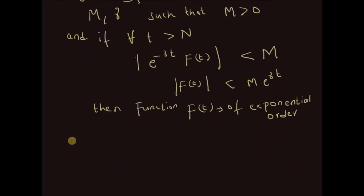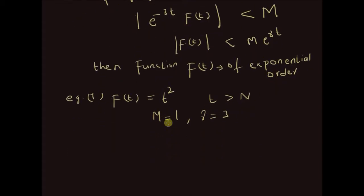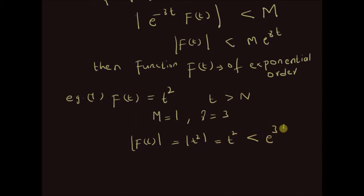Now let us look at an example illustrating this concept. Example one: the function f of t is equal to t squared. For values of time t greater than n, we can find that for values of m equal to 1 and gamma equal to 3, the absolute value of f of t equals t squared, which is always less than e to the power 3t.